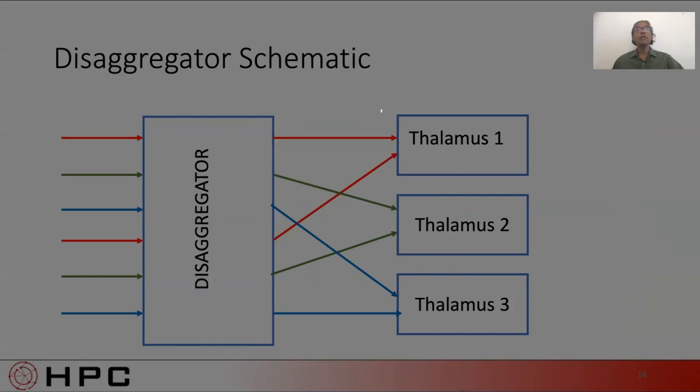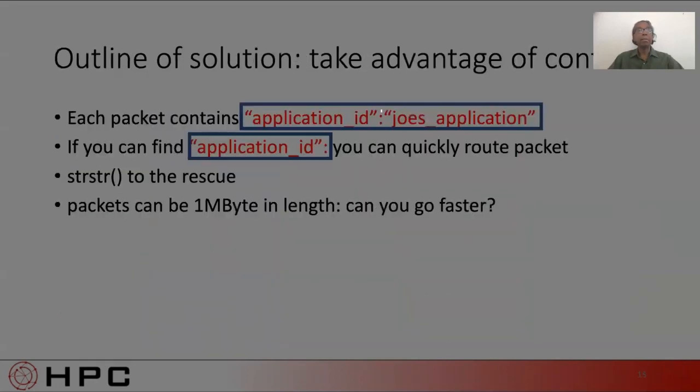I beg your pardon for overworking the streaming metaphor a little bit. But this is a rough schematic of what things look like. What the disaggregator needs to do is to route packets with minimal delay. This would have been an impossible task if it weren't for some valuable context that we could leverage. Each packet contains a key value as shown. So, in this case, if we knew the value of the key application ID was Joe's application, we route it to the Joe topic and we're done.